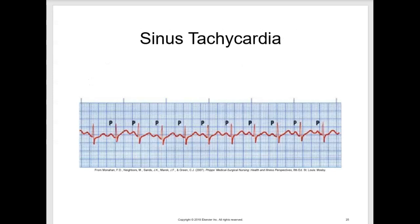Now we're going to move on and talk about sinus dysrhythmias. The SA node in the right atrium is the pacemaker in all sinus dysrhythmias. The first sinus dysrhythmia is sinus tachycardia. When the rate of the SA node discharge is more than 100 beats per minute, the rhythm is called sinus tachycardia.